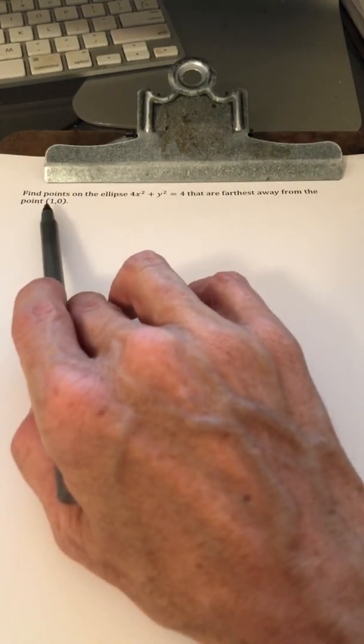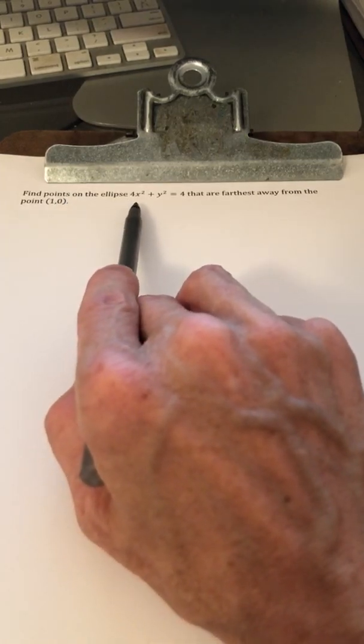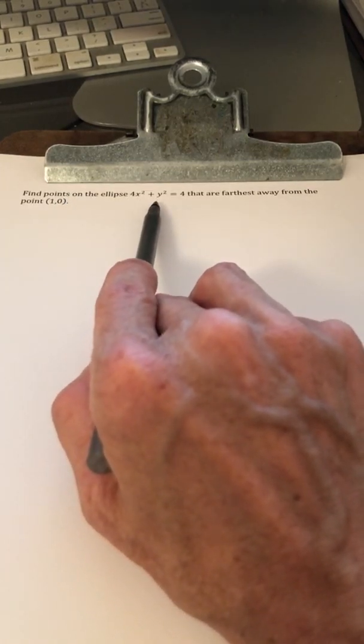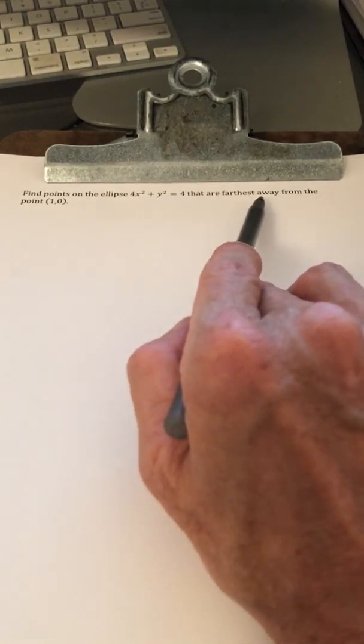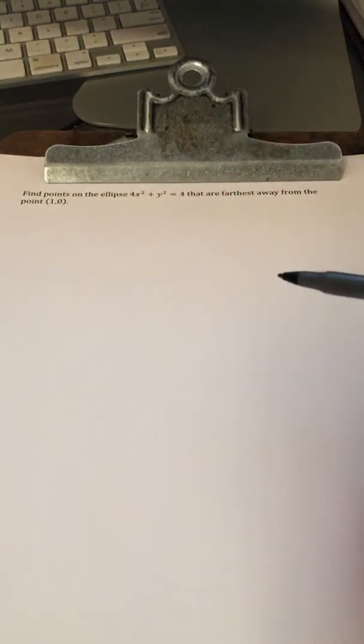We are asked to find points on the ellipse 4x squared plus y squared equals 4 that are farthest away from the point (1, 0).